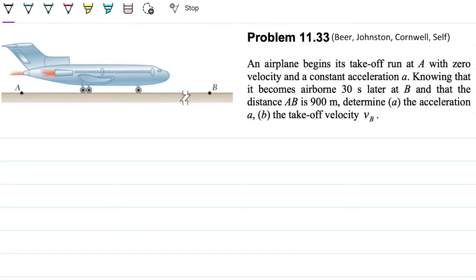The problem statement reads: an airplane begins its takeoff run at point A with zero velocity and a constant acceleration a. Knowing that it becomes airborne 30 seconds later at point B, and that the distance AB is 900 meters, determine the acceleration a and the takeoff velocity vB — that is, the velocity when the plane is at point B.